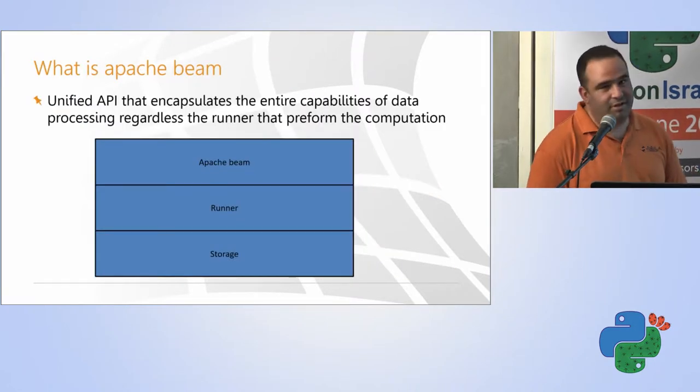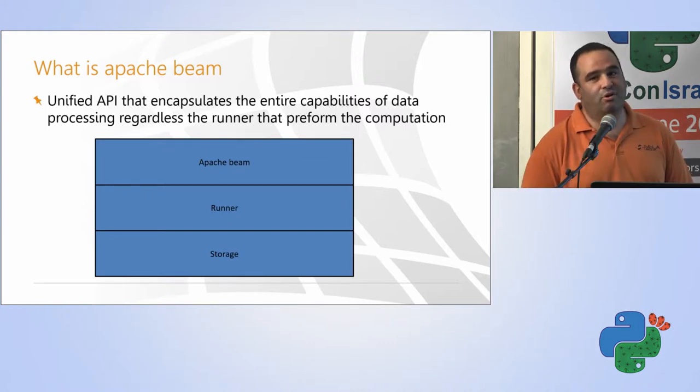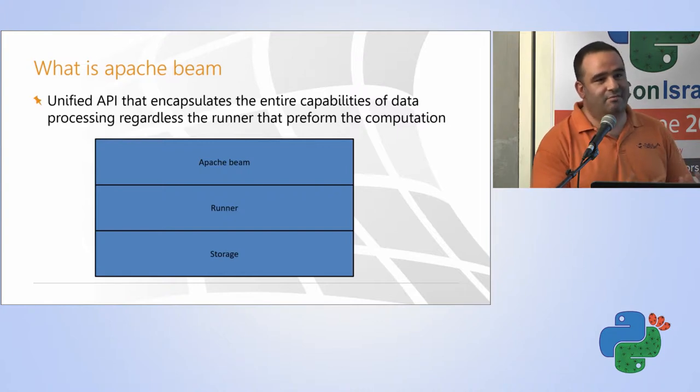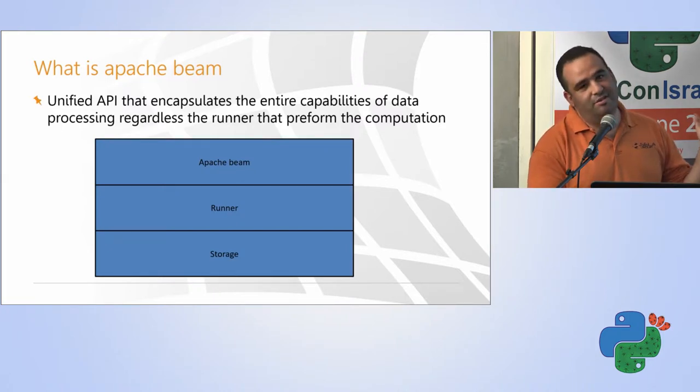And the idea of Apache Beam is try to create a unified API for all kinds of runners that you can use the same code to running your code in Dataflow or in Spark or in Flume or any other framework that you like. And your code will be the same. So, you will have the storage layer that there we have some kinds of unified API. And the idea is that you will use any kind of runner that you want, those that specialize in streaming, those that specialize in batch data processing. But your code will be the same working with Apache Beam.